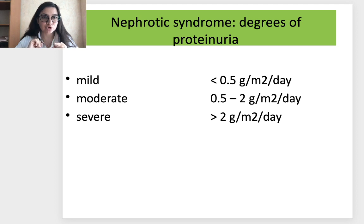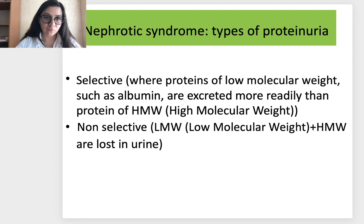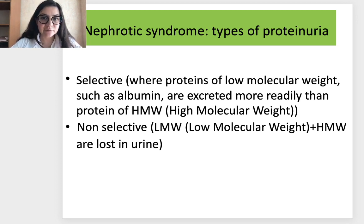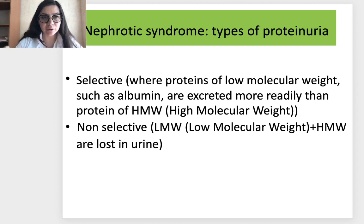Degrees of proteinuria: mild is less than 0.5 g/m² per day, moderate is 0.5 to 2 g, and severe is more than 2 g. For nephrotic syndrome, severe proteinuria is most usual. Proteinuria can be selective or non-selective. In selective proteinuria, low molecular weight proteins such as albumin are lost more rapidly than high molecular weight proteins like globulin. In non-selective proteinuria, both albumins and globulins are lost.